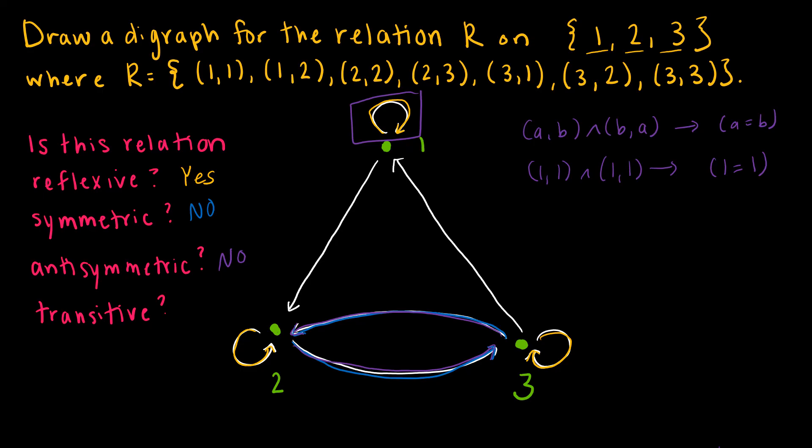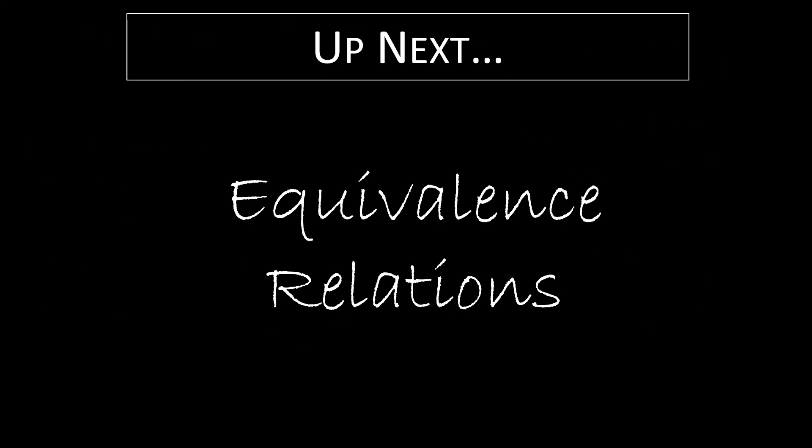The last one is transitive. Transitive takes a little more work. Transitive says essentially if I can get from one node to another node using two paths, then I should be able to get there directly as well. For instance, I can go from two to three, and I can go from three to one. The question is, can I go from two to one? I have to have a direct path that goes from two to one, and I don't have that here. So because of that, it is not transitive. Up next, we're going to take a look at a special kind of relation called an equivalence relation.